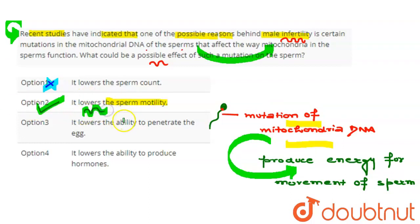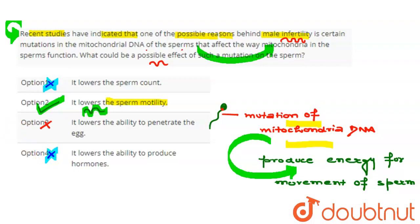The third option is: it lowers the ability to penetrate the egg — this option is also not correct directly, as the sperm will reach very late and ultimately fertilization will not proceed. The last option is: it lowers the ability to produce hormones — again this option is not appropriate. So the correct answer is the second option.